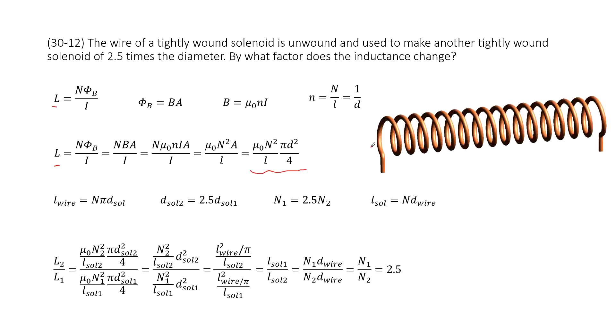So we can see as we talked about, we just get the same wires from solenoid one to make the second solenoid. So the wire length should be equal because it is the same copper wire.